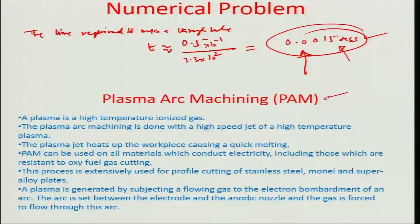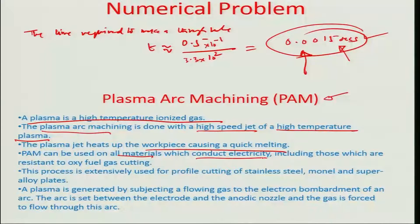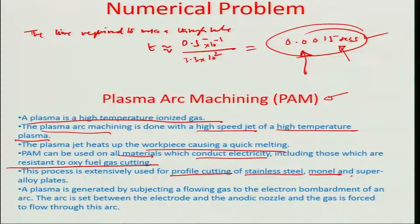I also wanted to introduce the basic definitions of plasma arc machining. A plasma is a high-temperature ionized gas. Plasma arc machining is done with a high-speed jet of high-temperature plasma, which heats up the workpiece and causes quick melting. This machining can be used on all electrically conductive materials, and is particularly applicable to materials resistant to oxygen-based fuel gas conventional cutting. It is extensively used for profile cutting of stainless steel, monel, and superalloy plates.